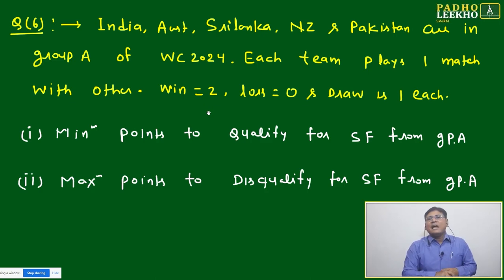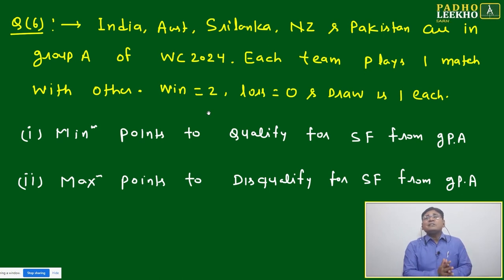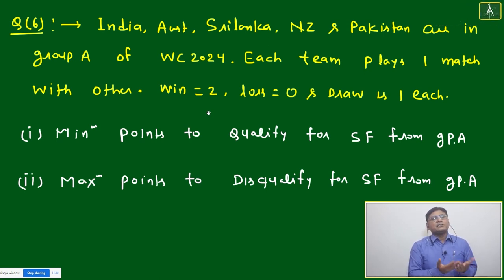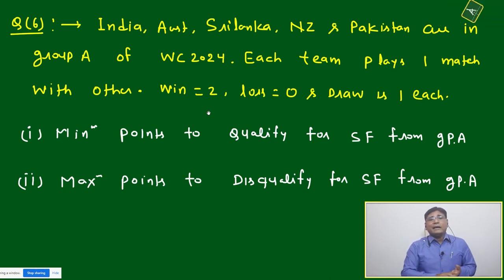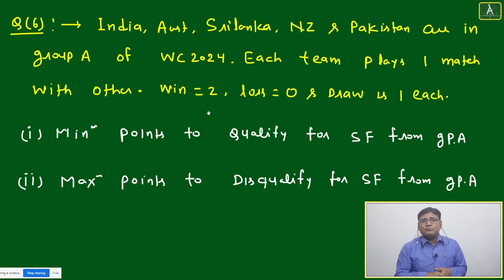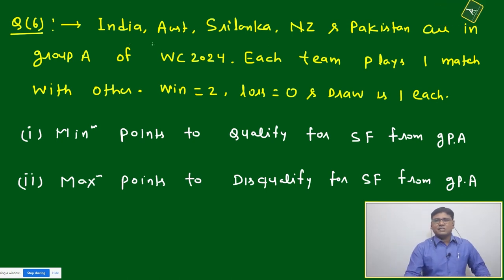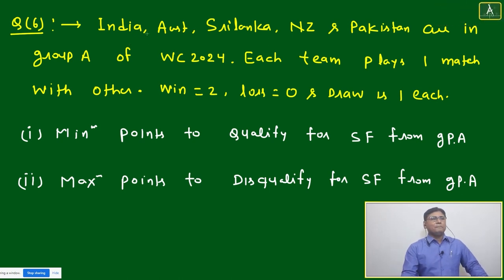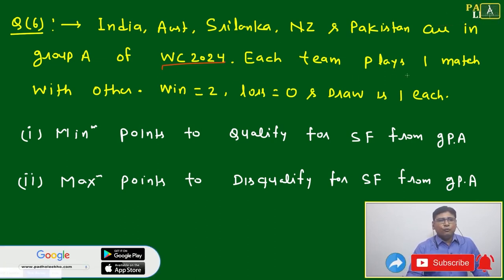This is a game-based caselet. It looks like a DI caselet with DI questions, but after understanding the question you will feel it is just another expression of integral solutions. I want to discuss how to approach and analyze this type of question very easily without making mistakes. The question is not tough — just introductory level. It says India, Australia, Sri Lanka, New Zealand, and Pakistan are in Group A of World Cup 2024.